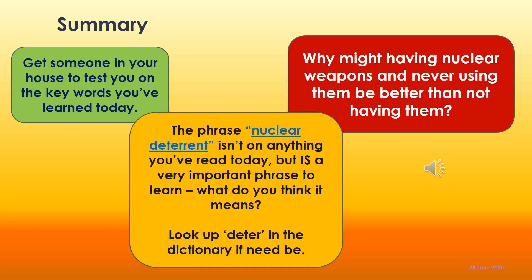Here's your final summary task. Everyone please have a go at the green task — get someone in your house to test you on the keywords, have a quick look at them and then take them to someone at home. Then make a choice between orange and red. The phrase 'nuclear deterrent' hasn't been in the lesson today, but it's a very important phrase to learn — see if you can find out what it means. If you need a dictionary, look up the verb 'to deter' and it should be clear. The red question asks: why might having nuclear weapons and never using them be better than not having them at all? Think about that carefully and work out your answer.